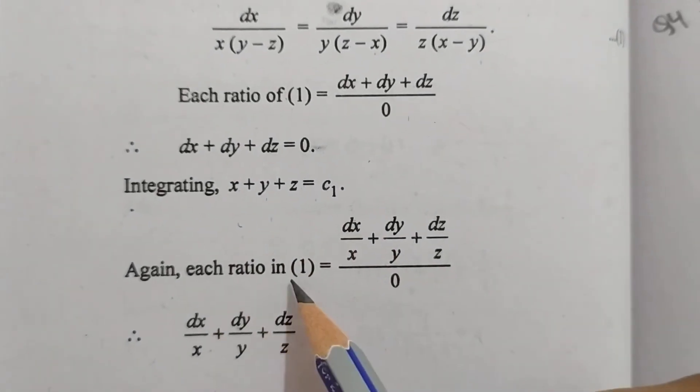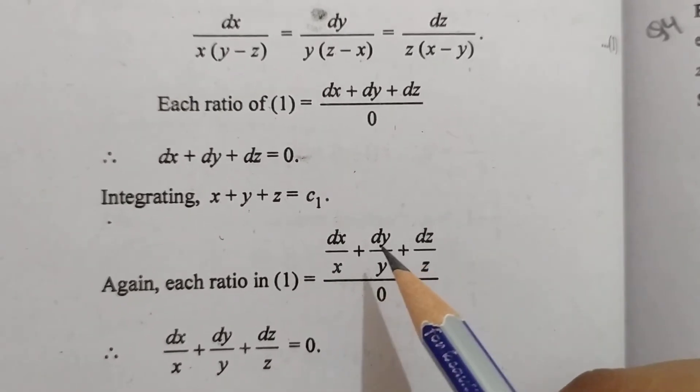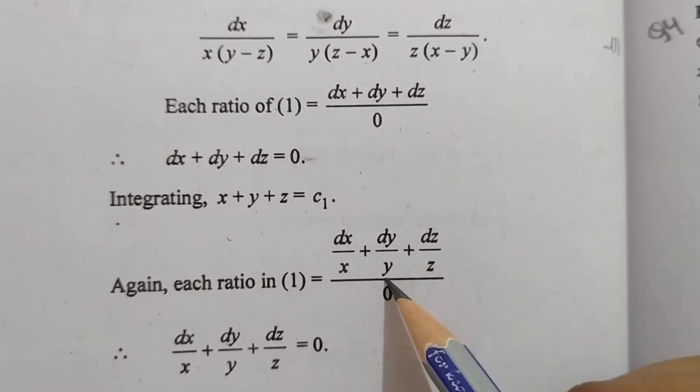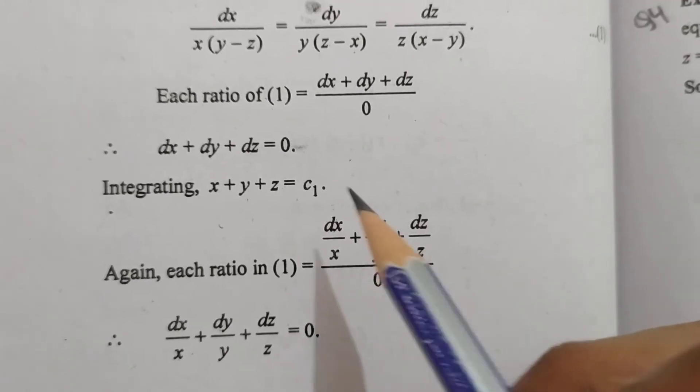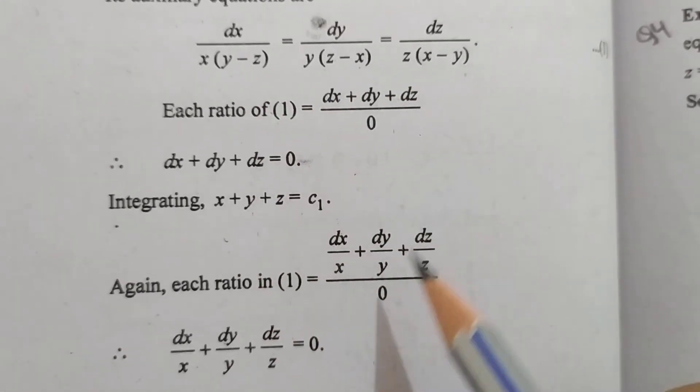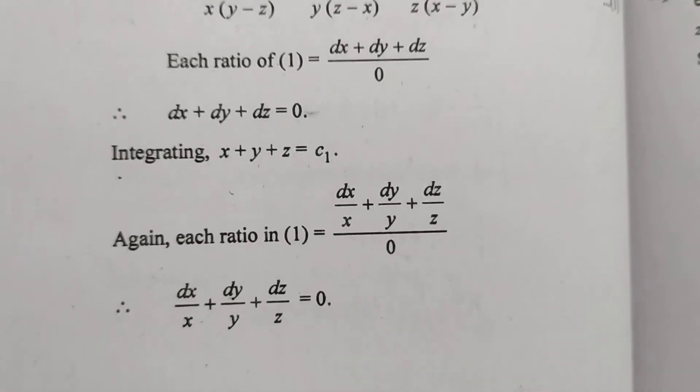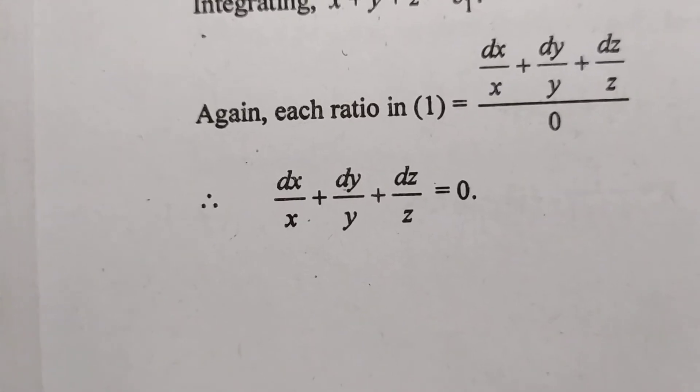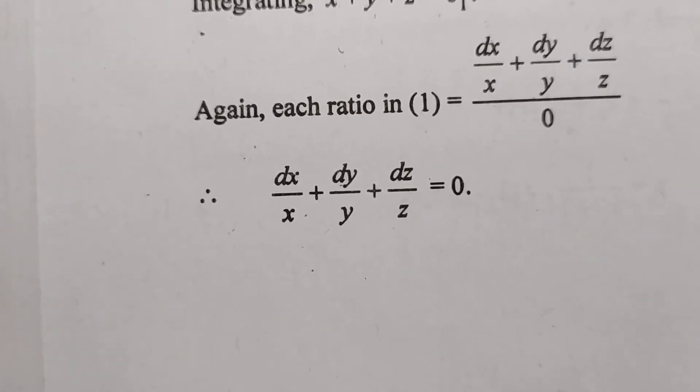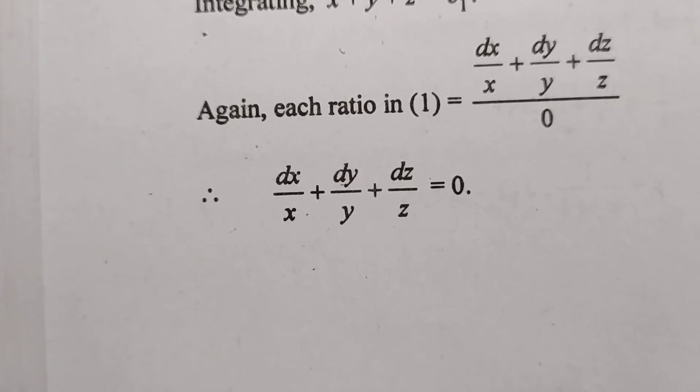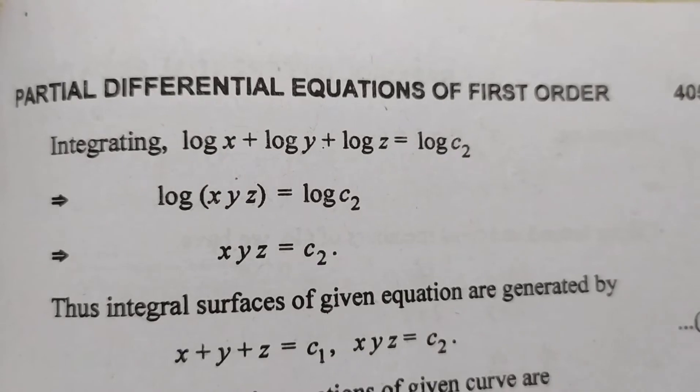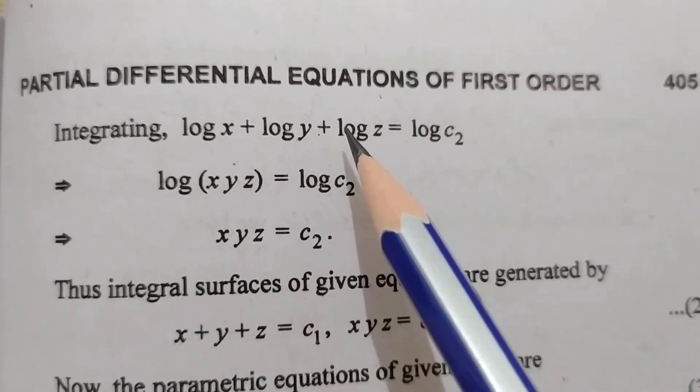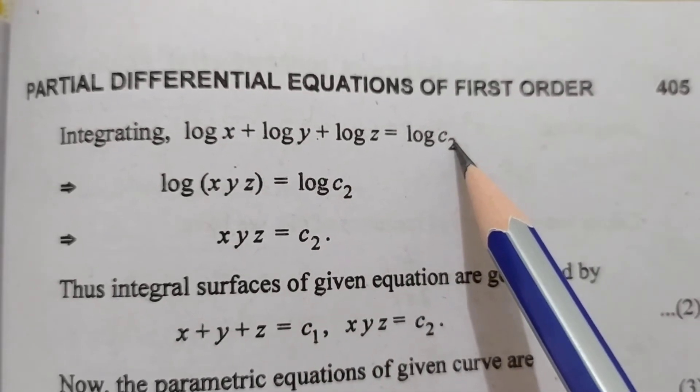Similarly, each ratio of 1 is dx/x + dy/y + dz/z = 0. When we solve this, the denominator equals zero. Therefore, dx/x + dy/y + dz/z = 0. Integrating, log x + log y + log z = log c2.